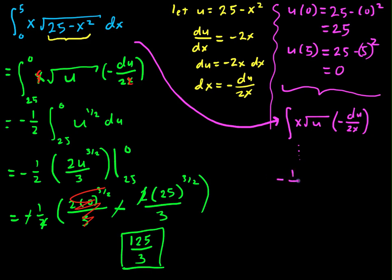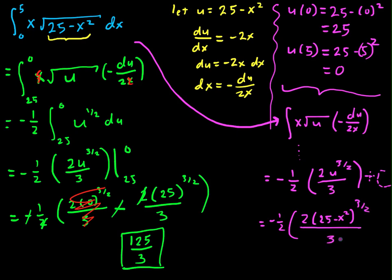So I would get negative 1 half times 2u to the 3 halves over 3. And I'd usually have a plus c here because this is an indefinite integral. But this is where the not-quite-so-clean thing comes with doing it this way. I can change back into terms of x's by substituting 25 minus x squared in there. So I get negative 1 half times 2 times (25 - x²) to the 3 halves all over 3. And I can actually evaluate this. I'm going to drop the c because c minus c will cancel out in the end.